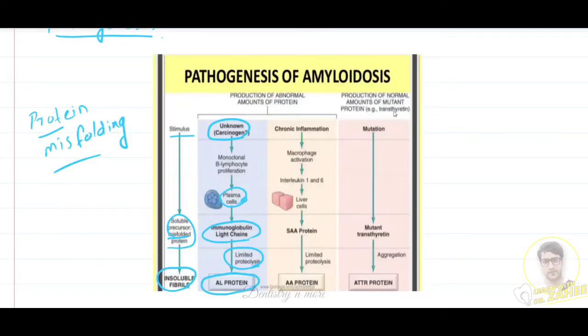Similarly in chronic inflammation cases, there will be macrophage activation instead of lymphocyte. There will be intermediary interleukin 1 and 6. Liver cells will be affected, producing precursor SAA protein and similarly limited proteolysis results in deposition of AA protein. Also there can be a mutation resulting in mutant transthyretin, leading to aggregation and deposition of ATTR protein. Ultimately it leads to the deposition of insoluble protein in the organs causing imbalance of normal functioning.